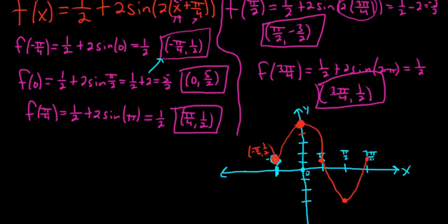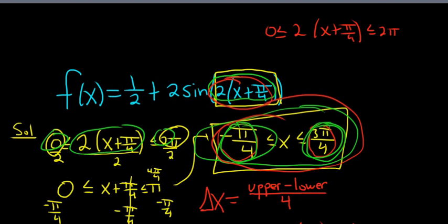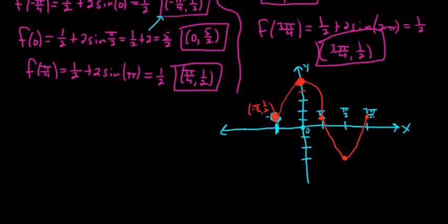I hope this video has been helpful to someone learning to graph sine and cosine. Remember step 1: take whatever is here and set it between 0 and 2π — every single time. Then you solve for x. Then you compute delta x and keep adding it. Then you plug in those numbers, plot the points, and you've got the graph. That's it.